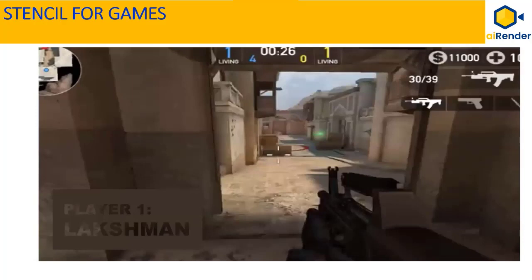Here are a couple of real-life examples of 3D graphics games that utilize stencil. As you can see on the left bottom corner, the player one Lakshman is being shown using stencil. Here, the alphabets in Lakshman are sort of carved out using stencil and the background 3D graphics scene of the game is visible through the letters, while the box containing the alphabets of Lakshman occlude the background 3D scene.